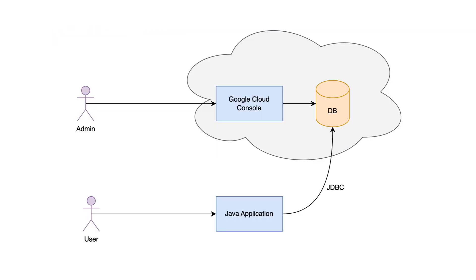Cloud SQL is a managed database service that allows you to run your own instance of a relational database on the cloud. Although several popular database engines are supported, for the examples in this video we'll be using a Postgres database instance. However, the concepts here would apply for other database types as well. You can think of an instance as a database server which itself can contain several databases and tables with shared compute resources.